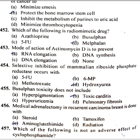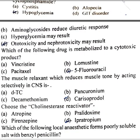Medical adrenalectomy in recurrent carcinoma of the breast is done with aminoglutethimide. Which one of the following is not an adverse effect of cyclophosphamide? Hypoglycemia. Which of the following drugs is metabolized to a cytotoxic product? 5-fluorouracil.